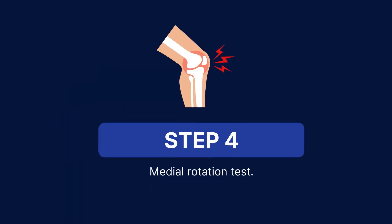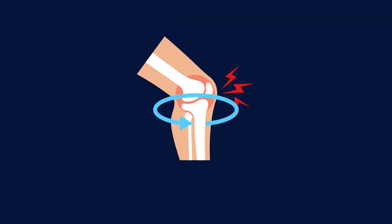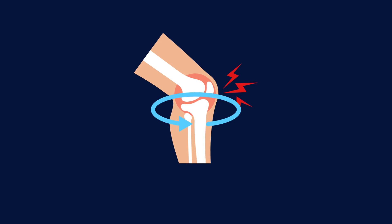With the patient in this position, the examiner applies a rotational force to the knee by placing one hand on the patient's distal tibia and the other on their proximal tibia. The examiner then rotates the knee internally while keeping the foot fixed on the ground.